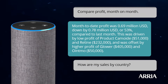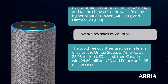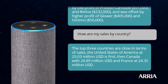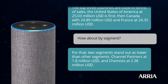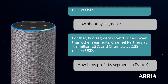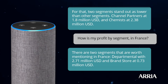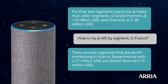How are my sales by country? The top three countries are close in terms of sales: the United States of America with $25.03 million is first, then Canada with $24.89 million and France at $24.35 million. How about by segment? Two segments stand out as lower than others: Channel Partners at $1.8 million and Chemists with $2.38 million. How is my profit by segment in France? There are two segments worth mentioning in France: Departmental with $2.71 million and Brand Store at $0.73 million. Thanks, Alexa.